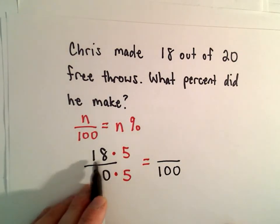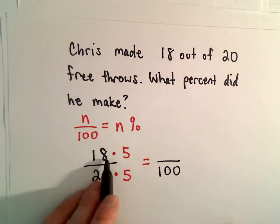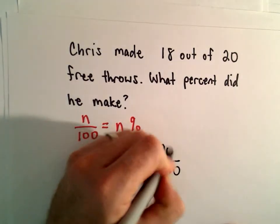5 times 10 is 50, 5 times 8 is going to be 40. 50 and 40 would give us 90.